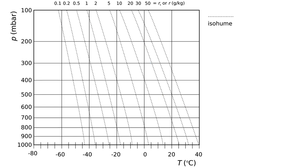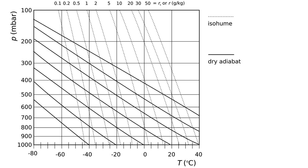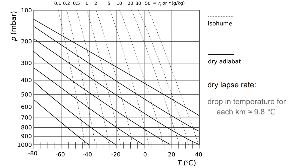Now I've cleared the diagram. You see the isohumes here, as well as the pressure and the temperature. There are two sets of extra lines we need. First of all, dry adiabats. In a previous lesson I explained that if an air parcel goes up in the atmosphere, it expands because the pressure is lower and it cools due to expansion — it cools adiabatically. It's called a dry adiabat because if no condensation takes place, all the water will be in the gas state — that air is said to be dry. That air cools with a dry lapse rate of about 9.8 degrees Celsius per kilometer, which is why these lines are more or less linear.